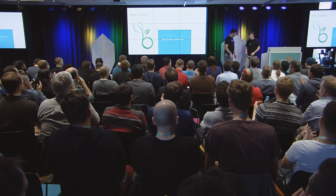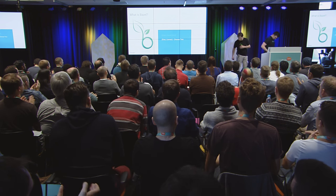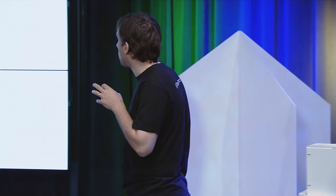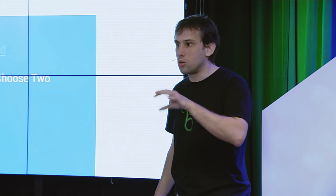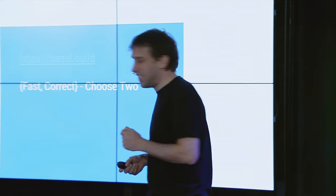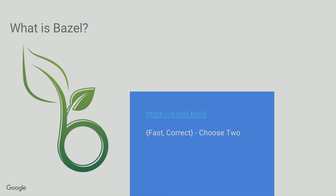Thank you. So Bazel is the Google open-source build system. It's called Blaze internally, and the previous speakers told you they were dogfooding it for six months. We were dogfooding Bazel as Blaze for nine years. We open-sourced Bazel last year in March 2015.